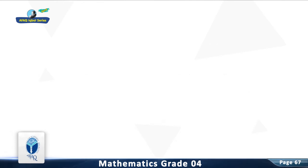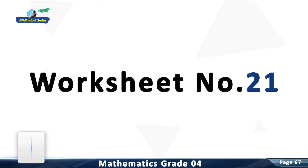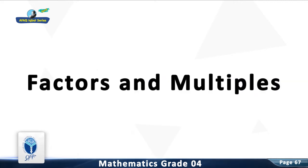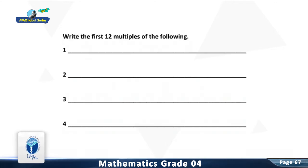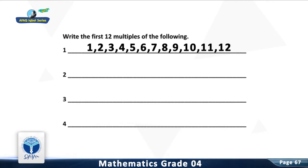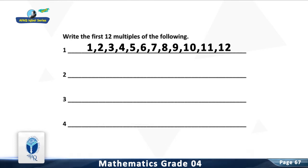Chapter 4: Factors and Multiples. Worksheet number 21. Major Concept: Factors and Multiples. Resource Pack Concept: Factors and Multiples. Write the first 12 multiples of the following numbers. Question 1: Write the first 12 multiples of 1. You are right. The first 12 multiples of 1 are 1, 2, 3, 4, 5, 6, 7, 8, 9, 10, 11, 12.